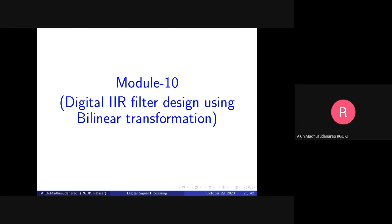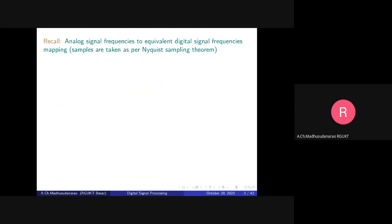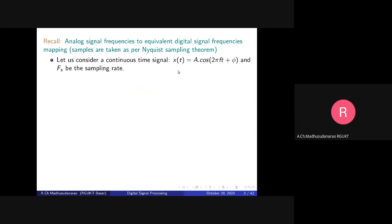Let's recall the background: mapping analog signal frequencies to equivalent digital signal frequencies based on Nyquist sampling theory. The sampling rate f_s must be at least twice the highest frequency of the message signal. Consider a continuous-time signal with frequency f; the constant sampling rate is f_s samples per second, and we sample it at every T_s interval.